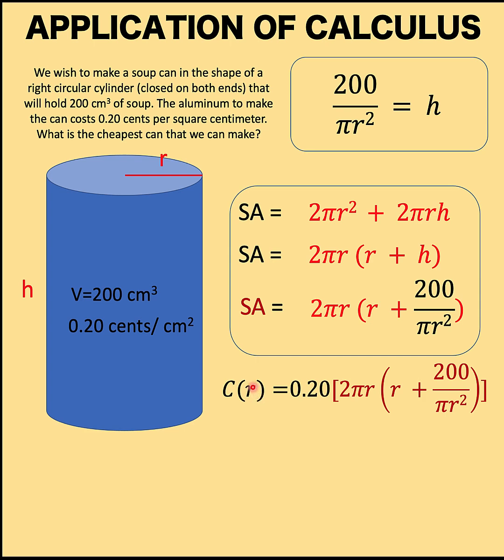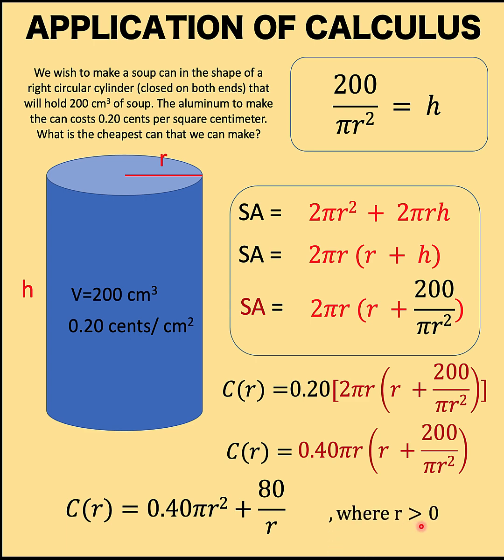In here, we would like to find what is the radius of this can that can give us the cheapest possible can. Let's simplify this first by multiplying 0.20 times 2πr to arrive at this equation. And let's distribute 0.40πr to this binomial to arrive at this simplified form. This is now our cost function: C(r) = 0.40πr² + 80/r. And let's remember that this r cannot be 0. That r, in fact, must be greater than 0 because we are measuring radius. Radius cannot be negative.